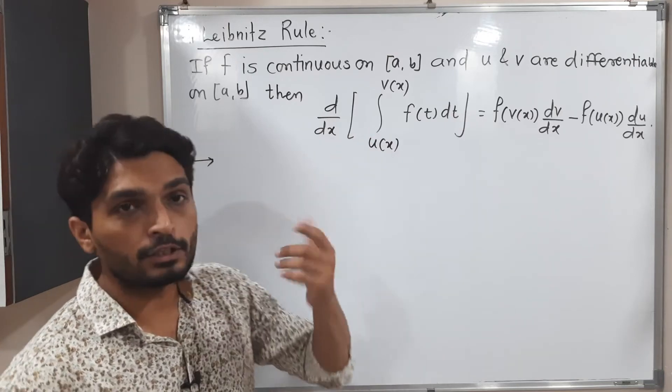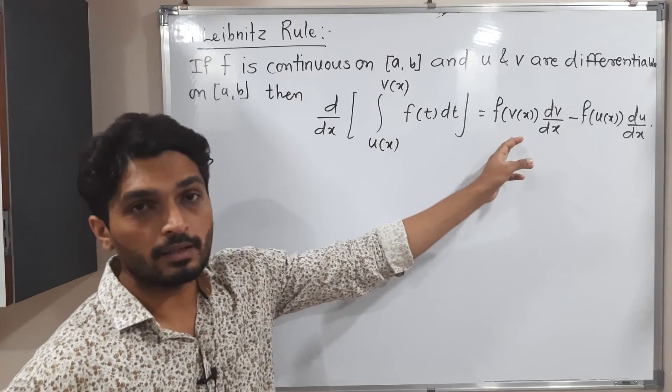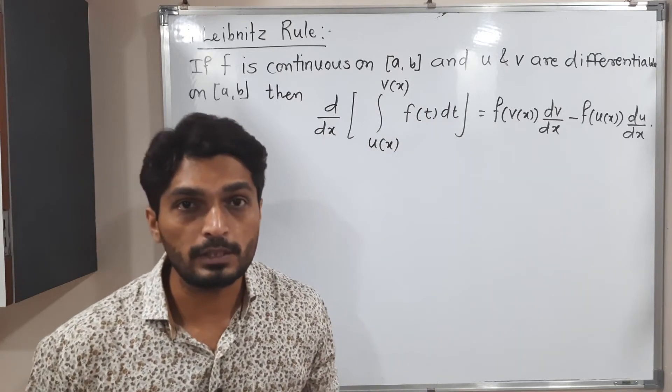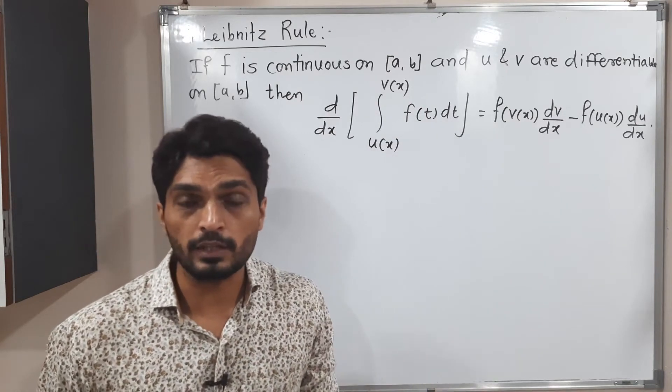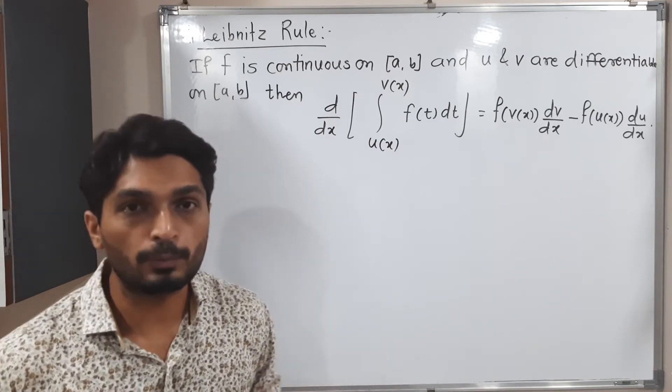That means what we do actually. So derivative and integration will get canceled. We put t is equal to v of x and we take derivative of v with respect to x minus after that, we put the lower limit at place of t and we take derivative of u with respect to x. So this thing we have to prove.